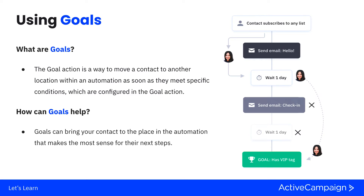Goals are ways for you to move contacts from one spot in an automation to another, letting them bypass certain steps you've created. They act as an anchor — for example, if Tabitha takes a certain action, we bypass her past two emails and two wait periods into the next step. Goals can relate to a registration date, receiving a tag, submitting a form, or clicking a link, creating seamless experiences by moving contacts based on how they interact with your business.